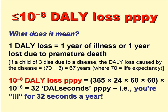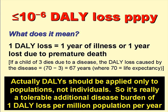10 to the minus 6 DALY loss per person per year equals 365 times 24 times 60 times 60 — that's the number of seconds in a year — times 10 to the minus 6, which is a loss of about 32 disability adjusted life seconds, or DALY seconds, per person per year. So it's acceptable if you're ill for 32 seconds a year. In point of fact, DALY losses should only be applied to populations and not to individuals, so really this 10 to the minus 6 DALY loss per person per year is a tolerable disease burden of one DALY loss per million people per year.